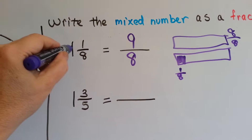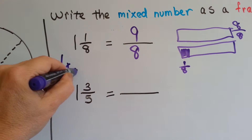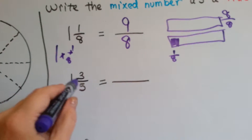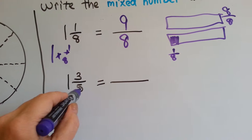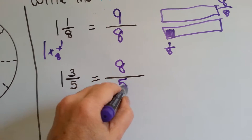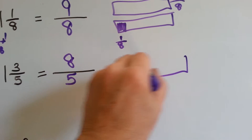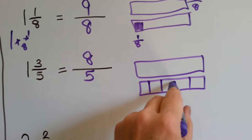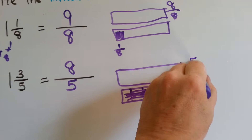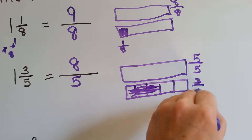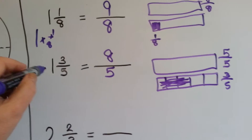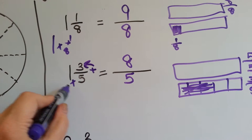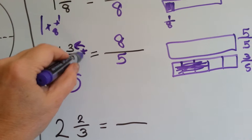What we did was: this big whole number times the little denominator, plus the numerator up there. Eight plus one is nine, and then we put the denominator there. Let's try it with this one: one times five is five, plus three is eight — eight-fifths. If we had a whole one and another one split into fifths with three of them, we would have five-fifths and the three-fifths — that gives us eight-fifths. So all we had to do was say one times the five plus this three — it's almost like going in a circle.